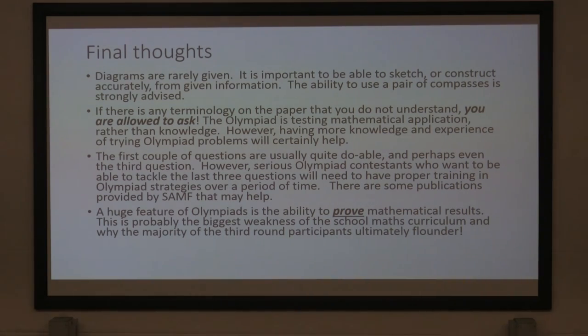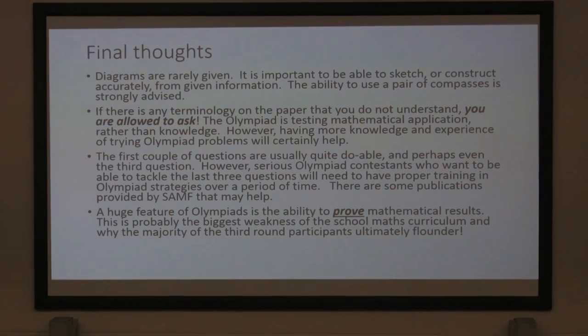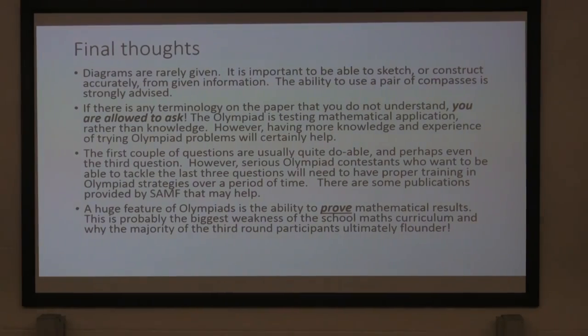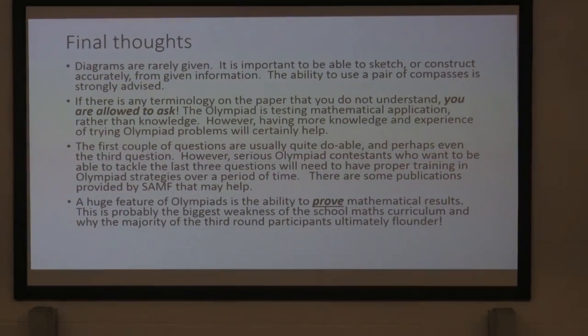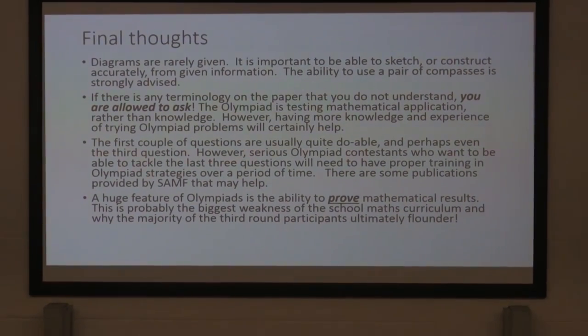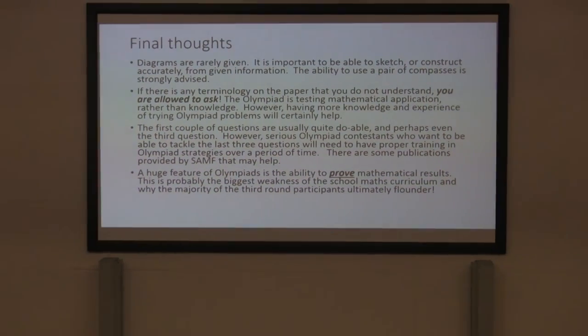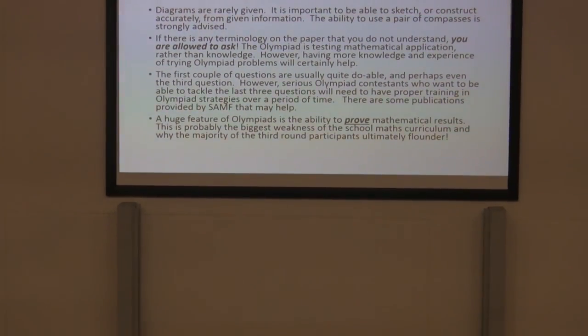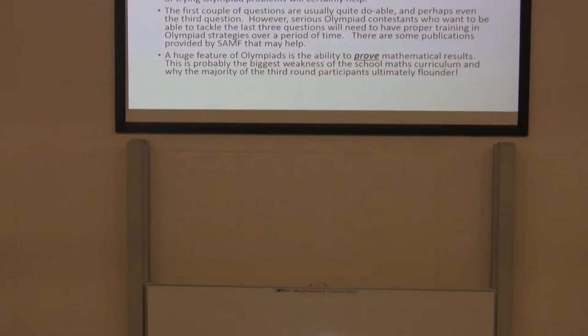Something like: prove that there's no largest prime number — who would know how to do that? Prove that there's no largest integer. Prove that there's no smallest rational number. These are all really easy proofs when you see them, but if you're not exposed to that kind of thing, it would be difficult for you without context.